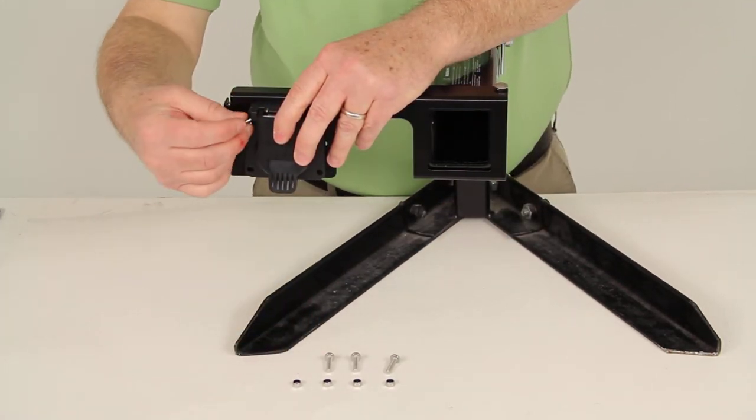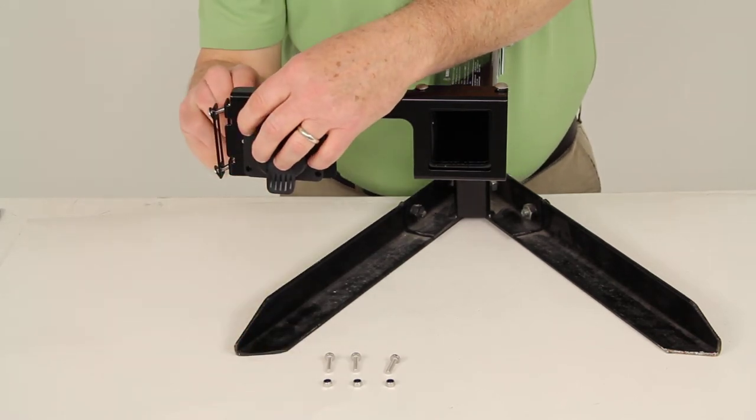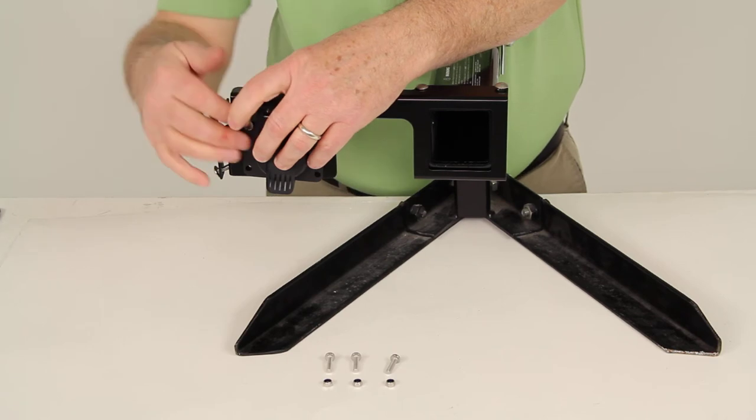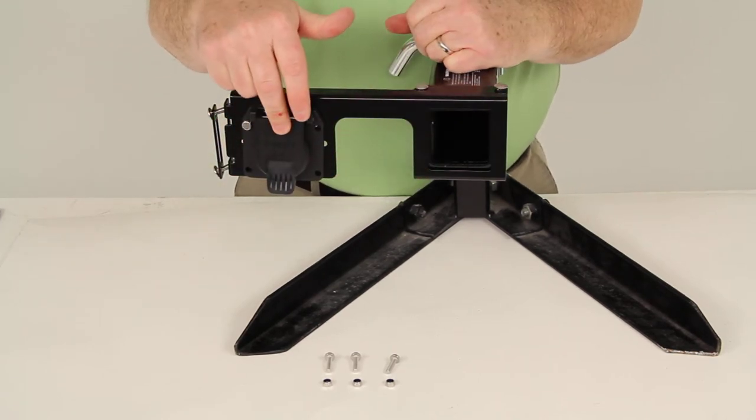Take these other stainless steel bolts and nuts, put it through, put the nut on the back, tighten it down, do that to all four and that would hold your six or seven-way connector to your bracket.